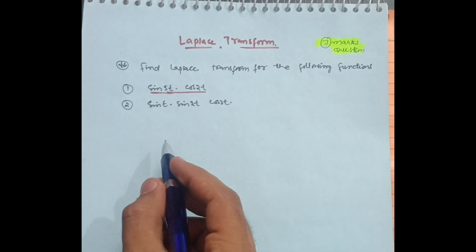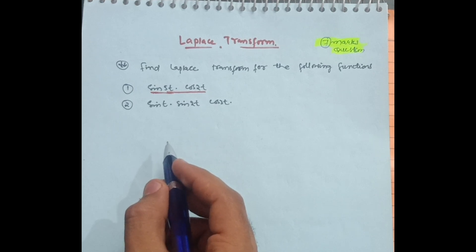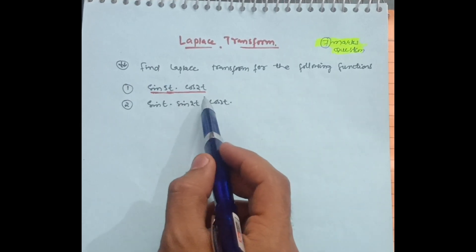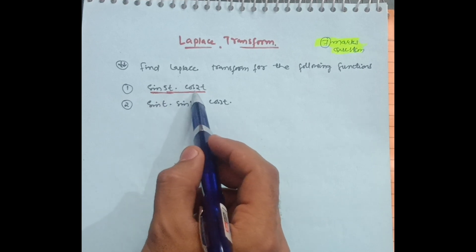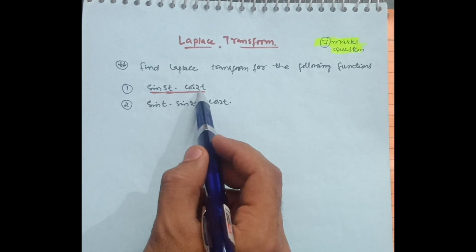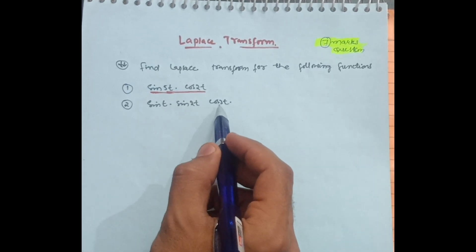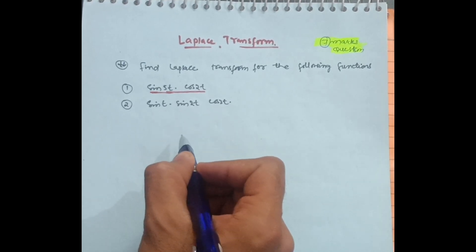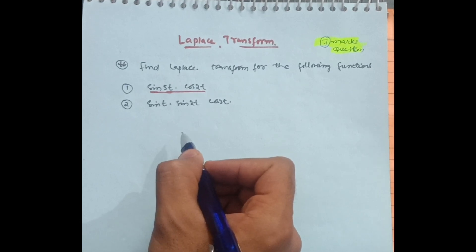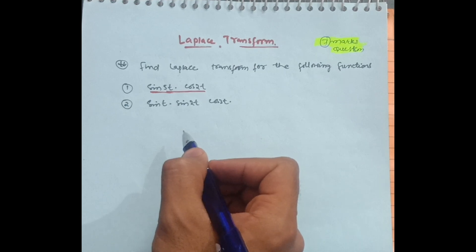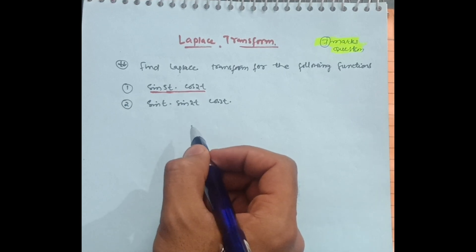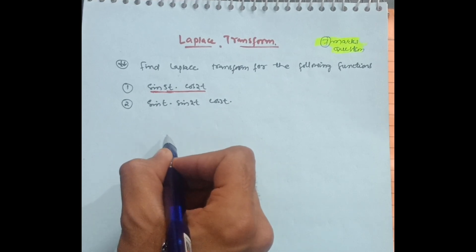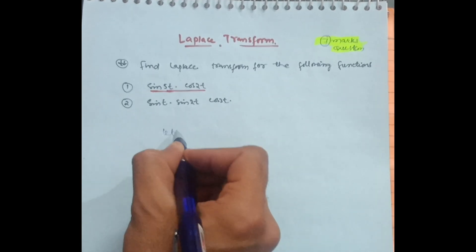Hello everyone, welcome back to my channel. Today I will discuss Laplace transform — the most important questions. We have to find the Laplace transform for two functions: sine 5t into cos 2t, and sine t, sine 2t, and cos 3t. This is a seven-mark question as far as VTU examination is concerned, and it is applicable for all universities. So let me start solving this particular question.